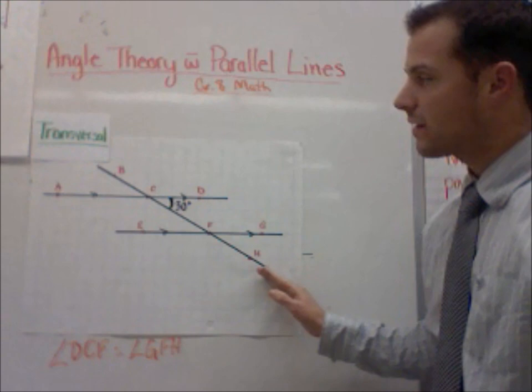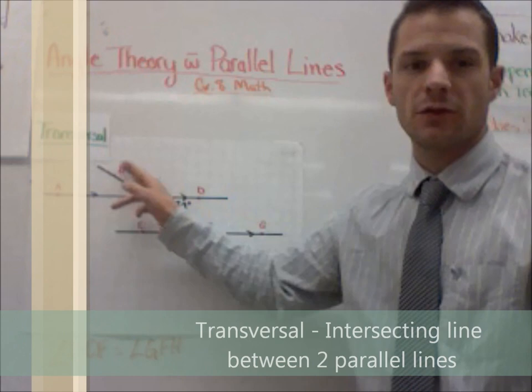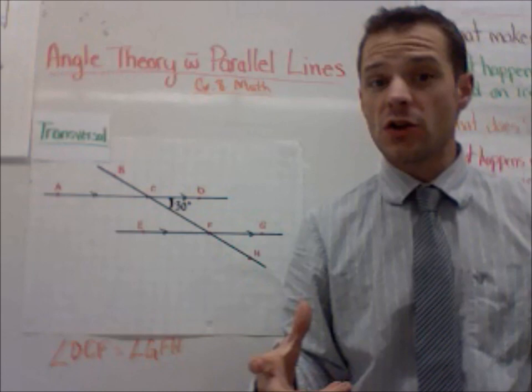Running through them at this angle here, this line is what we call a transversal. So line BH is a transversal that runs through these two parallel lines. So far, so good.